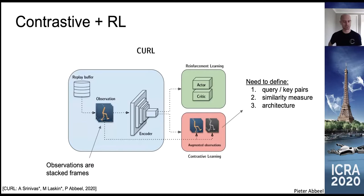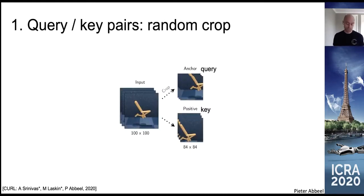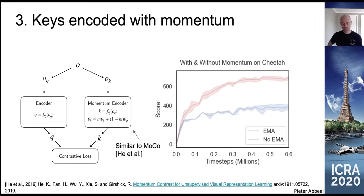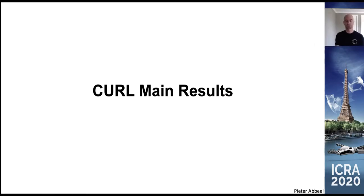For query-key pairs, we investigated many variations but zeroed in on random cropping as most effective: we take an input stack of frames and randomly crop it in two different ways, and the network must learn these represent the same underlying situation — enforcing high similarity between the embeddings. For similarity, the SimCLR paper used a simple inner product, but we found a learned weight matrix is needed in our scenario. We also adopt momentum on the key encoder, similar to MoCo from Facebook, which empirically helps a lot.